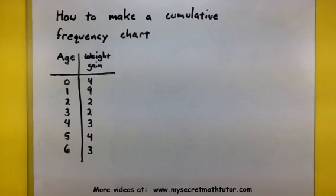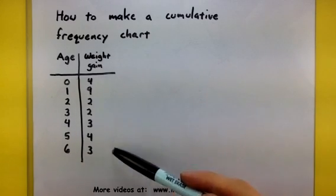Now what this type of chart will keep track of is our cumulative frequency. Think of that as our grand total. So the data I will be using represents the age of a toddler and their weight gain every single year in pounds.